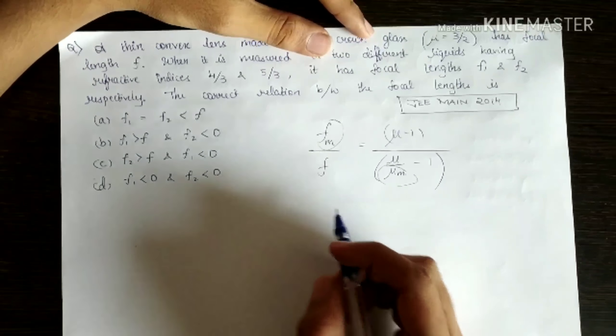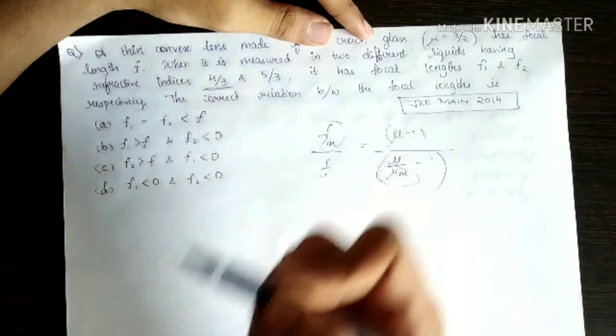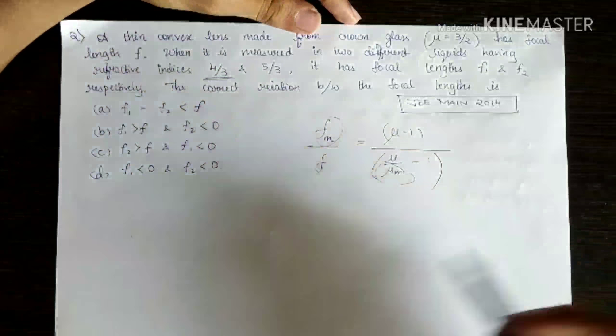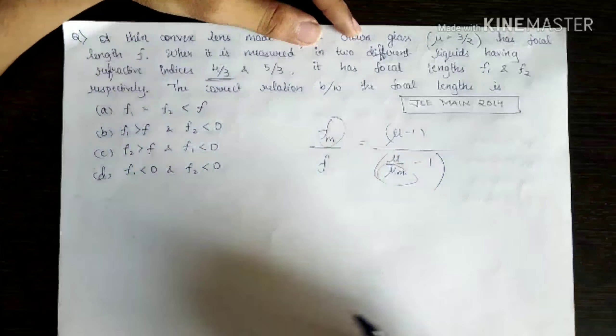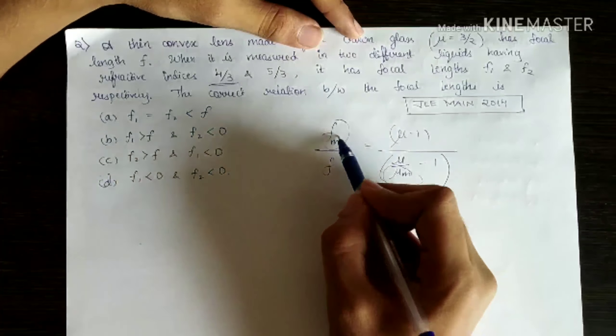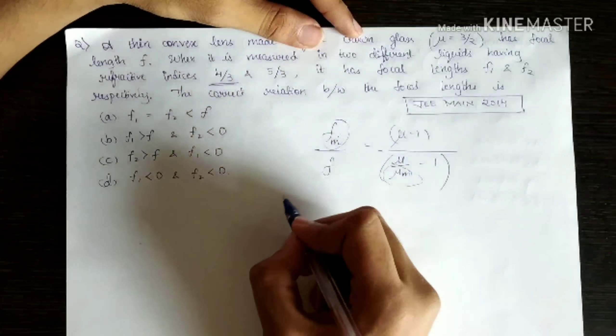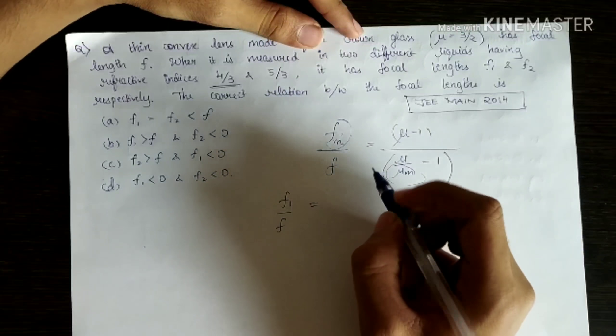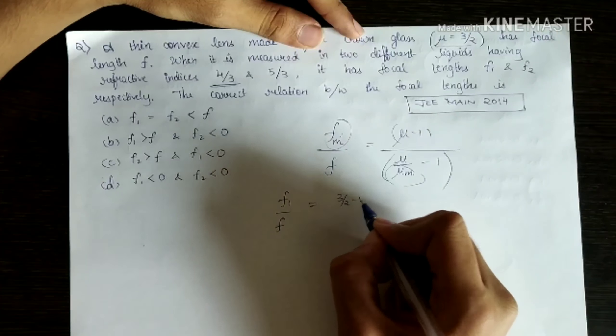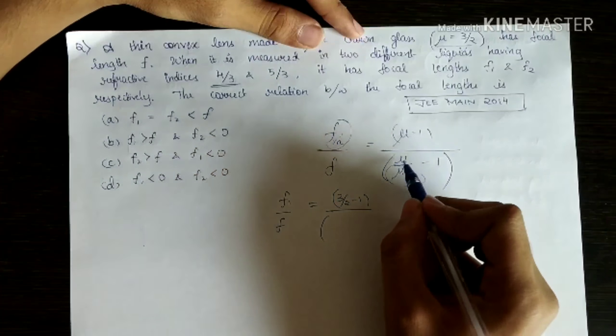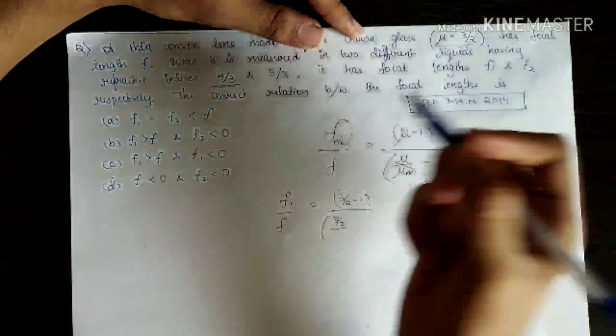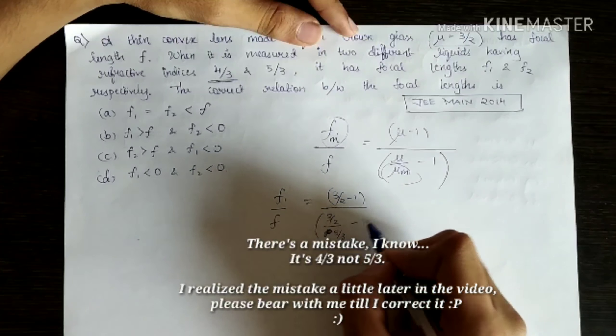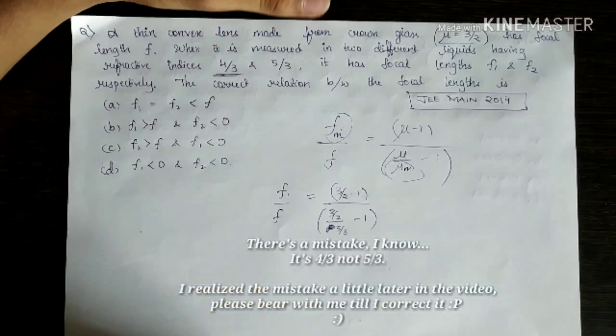Now, let's take the first case where 4/3 is the medium's refractive index. 4/3 is actually water, you already know that. Now, Fm in this case will be F1 divided by F equals μ - 1, μ is 3/2, so 3/2 - 1, divided by μ which is 3/2 divided by μm in this case will be 5/3, so 5/3 - 1. From this, let's find out the relation.